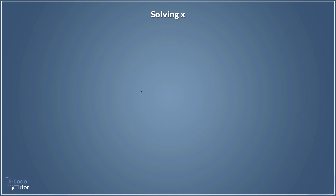We're going to start off this course by using the most simple equation I can think of, and that is x equals 10. So we know by looking at this, the unknown value of x is equal to 10. When we're using letters in algebra like this, it's a container for a value — like an empty box which we can put a value inside, a value we don't yet know.